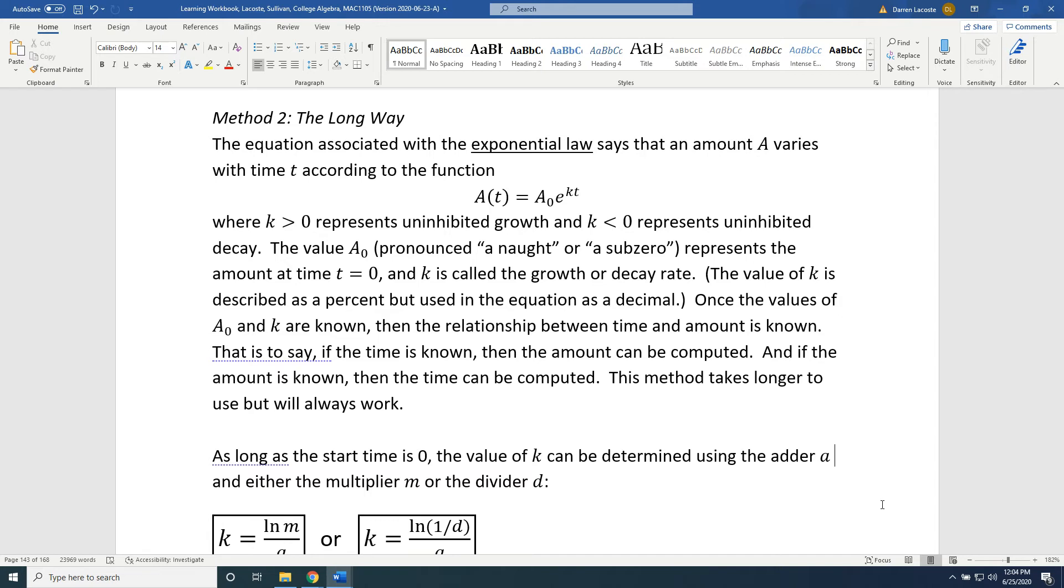Once the values of A₀ and k are known, then the relationship between time and amount is known. The reason why this skill is so important in the real world is because it allows us to predict the future. Once you have your equation, if someone gives you an amount, you can predict the time when you'll have that amount. And if someone gives you some future time, you can predict the amount you'll have at that time.